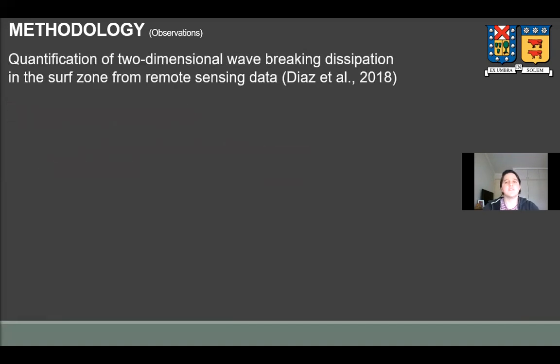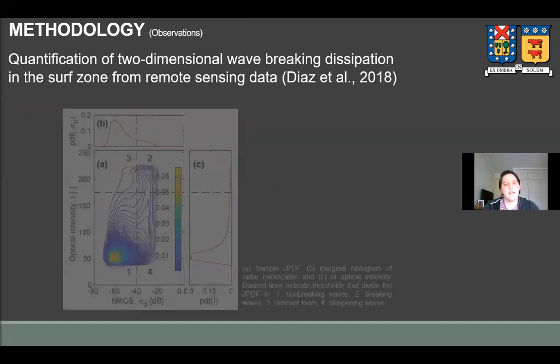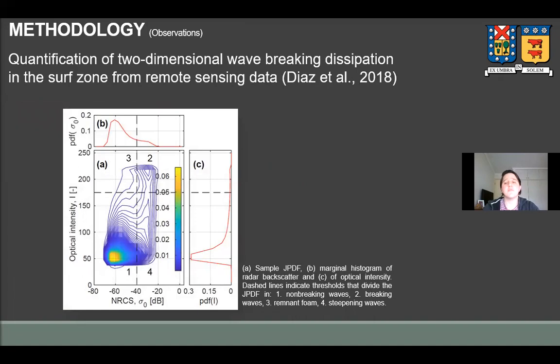To do so, we use the same instrumental setup as Diaz et al. 2018, which is based on optical and X-band recordings of the sea surface. As they did, we calculated the joint histograms of the measurements for each of these pair of recordings. Here, high optical intensities are indicative of random foam and active breaking, and high radar backscatter of steepening and broken waves. So, each sensor is subjected to false alarms, but sensor fusion is sufficient to discriminate pixels where active breaking is taking place. To do so, we use thresholds that are found looking for local minimum or maximum curvature in the marginal histograms.